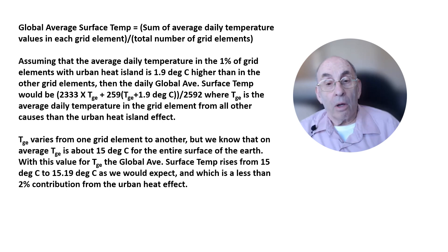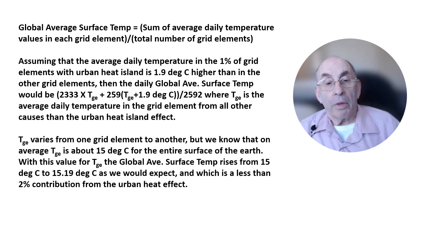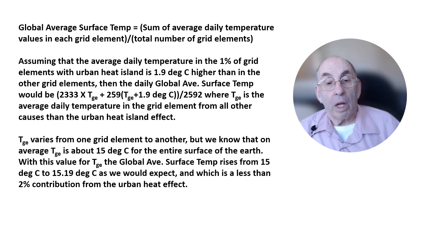In reality, the contribution to the overall global average surface temperature from the urban heat island effect is substantially less than a 2% effect. The reason for this is the varying size of the grid elements. As you probably noticed from the figure, the area of the grid elements is largest closest to the equator and smallest closest to the poles. Since very little of the world's population resides in high latitude areas closest to the poles, the 1% of grid elements with urban heat islands contains significantly more than 1% of the surface area of the planet.